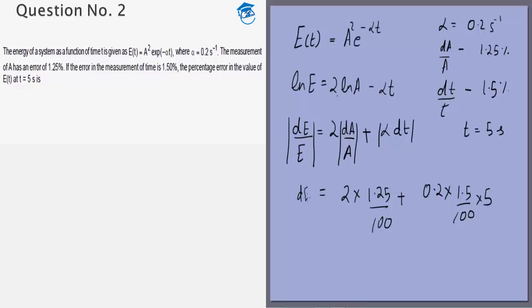Now this is dE by E but since we need to find a percentage error we can just multiply by 100 on both sides and what we get is this is 2 into 1.25 that is 2.5 plus 0.2 into 5 becomes 1 so it is 1.5 that is 4 percent. So the answer to this question is 4.